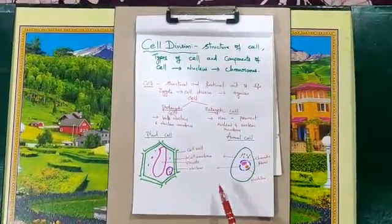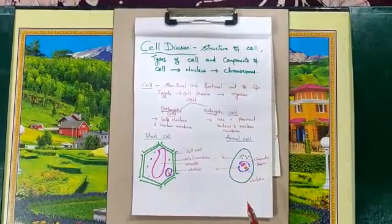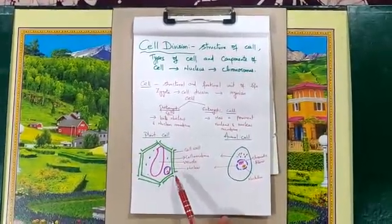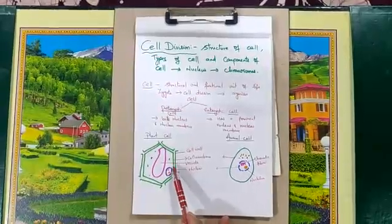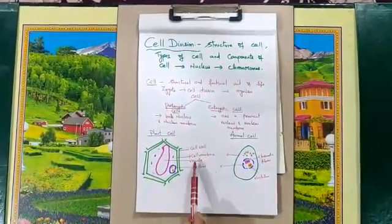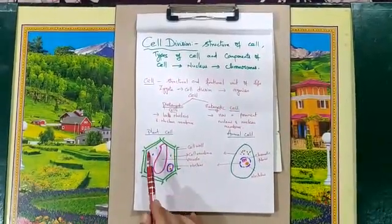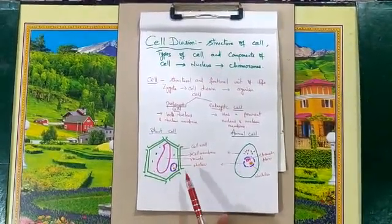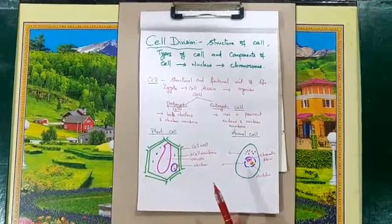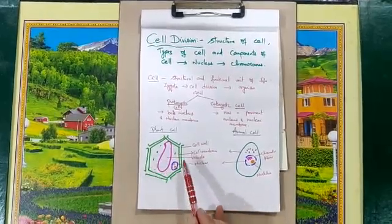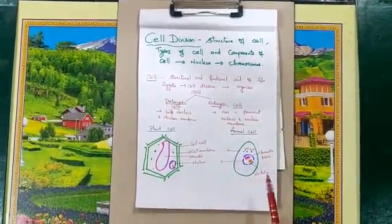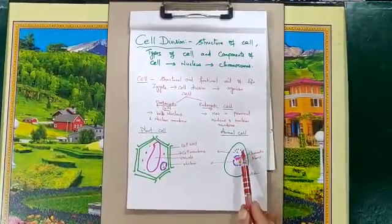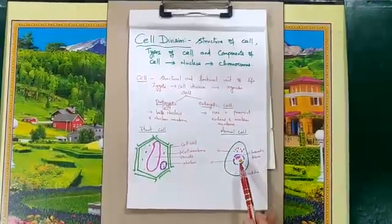Let us know about the structural difference of plant cell and animal cell. A plant cell is hexagonal or rectangular in shape, having two layers: a cell wall and a cell membrane. It is filled with cytoplasm, contains a large vacuole, and the nucleus is towards the periphery. Cell organelles are present inside.